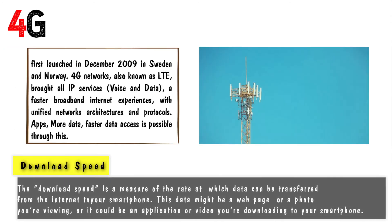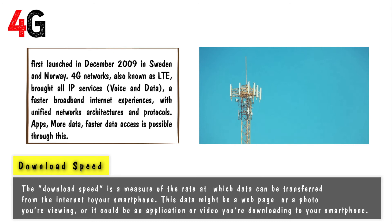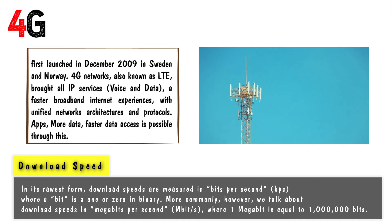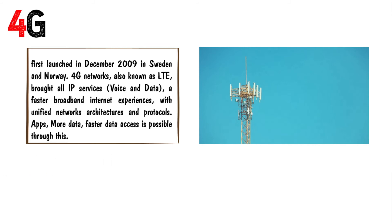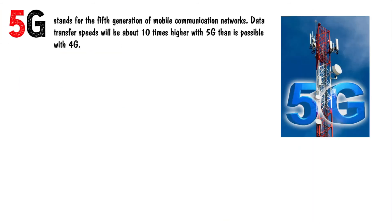4G was first launched in December 2009 in Sweden and Norway. 4G networks, also known as LTE, brought all-IP services — that is voice and data — along with a faster broadband internet experience with unified network architecture and protocols. More apps and faster data access are possible through this. The maximum download speed of 4G is 979 Mbps while the typical download speed is 90 Mbps.